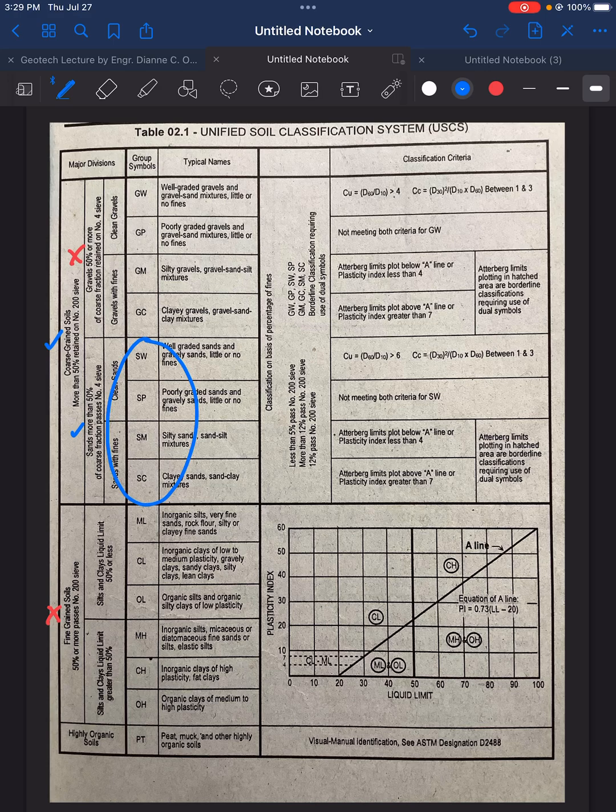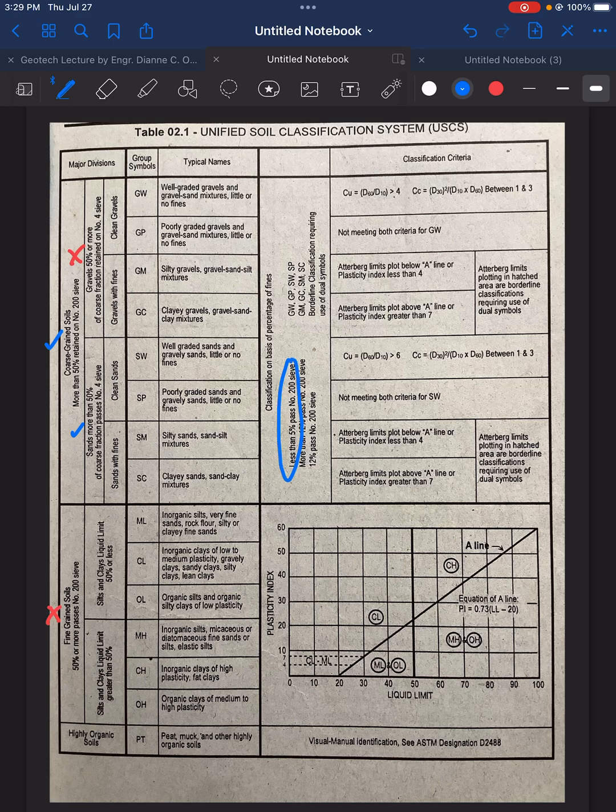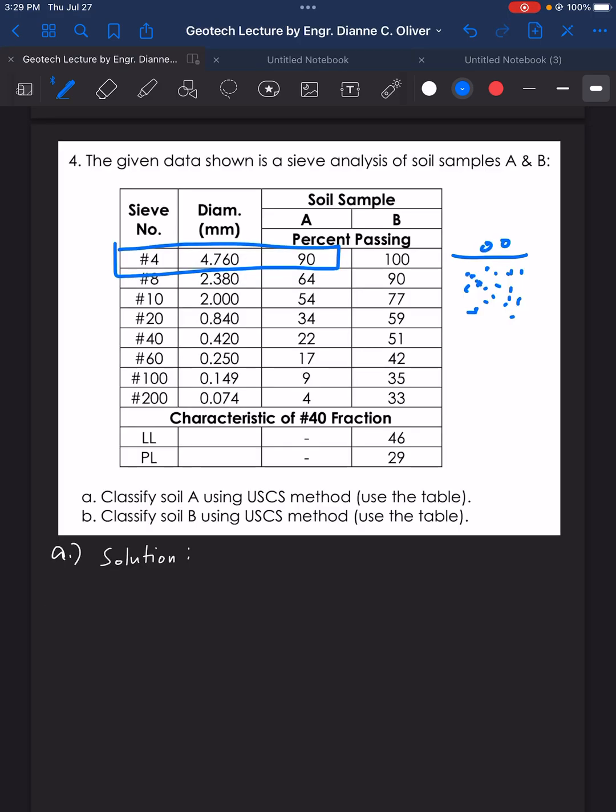We will now choose among the 4 classification. Is it SW, SP, SM, or SC? Let's go to the next classification here, basis of classification. We are looking again at sieve number 200. It says here, less than 5% pass sieve number 200. Again, going back to our sieve number 200, sieve number 200 has 4% passing.